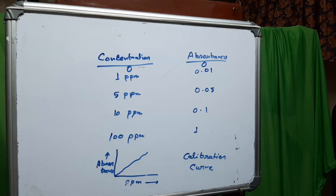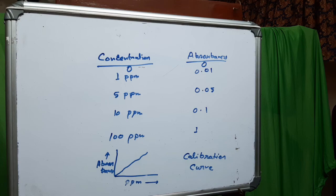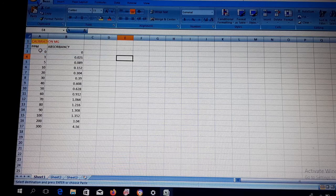From this curve we get a relationship between ppm and absorbance. From this relationship we can measure the unknown concentration. Now I am making a calibration curve using Excel.